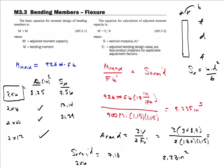While the 2×6 satisfies strength, we also need to check serviceability — deflection. Since this is a habitable attic with a plaster ceiling, excessive deflection could cause cracking. In the next video we'll calculate deflection for the 2×6, 2×8, and 2×10, determine the thrust that the ceiling joists will see, and cover how to design the connections between the ceiling joists and rafters. Thank you, and I hope this was helpful — please leave any questions in the comments.